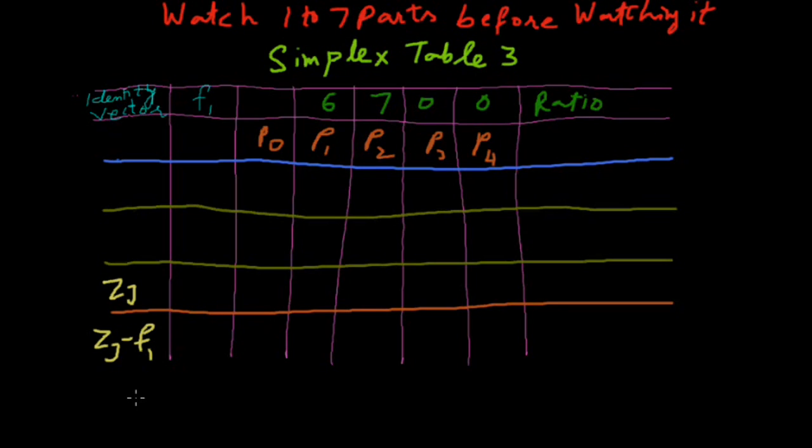In the 7th and 8th tutorial, our corresponding column is P1, so when we make the simplex table 3, we change identity vector P4 from P4 to P1.